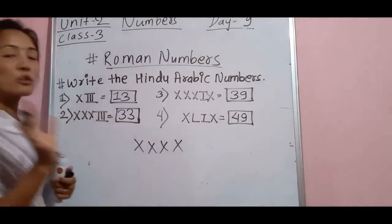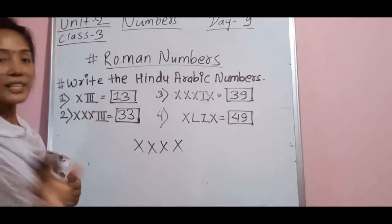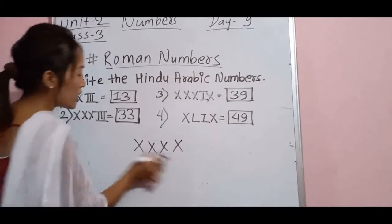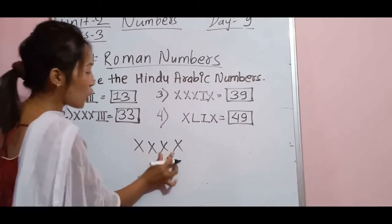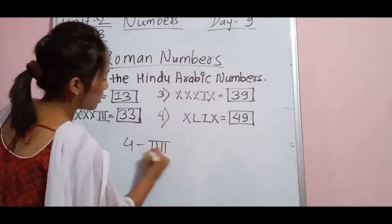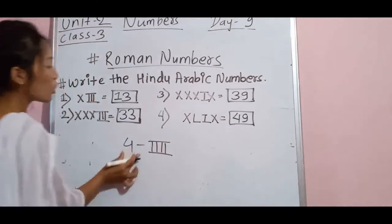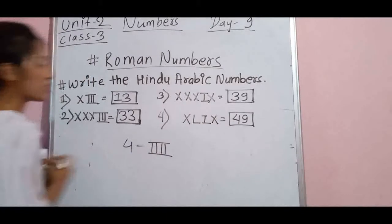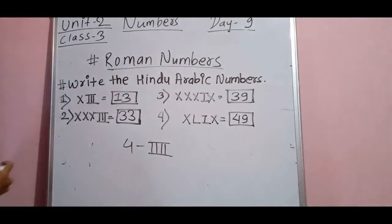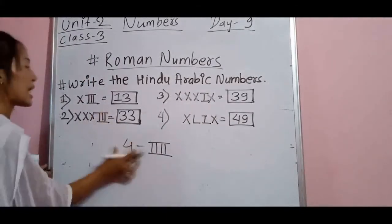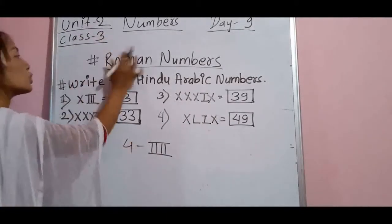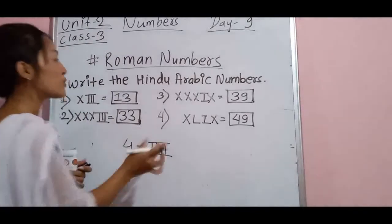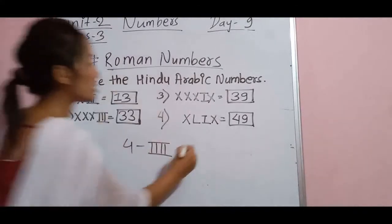If you have to write 40, you can write X once, twice — that is 20 — three times — that is 30 — but you cannot write it four times to make 40. So you cannot write like this. There is a rule in Roman numbers: you cannot write any single Roman number more than three times.